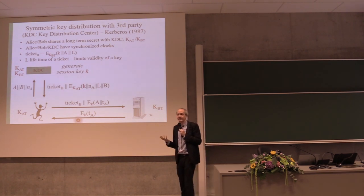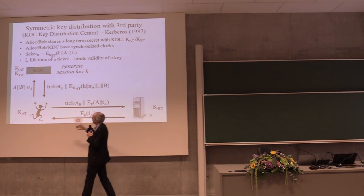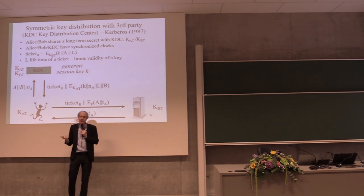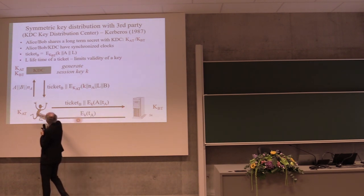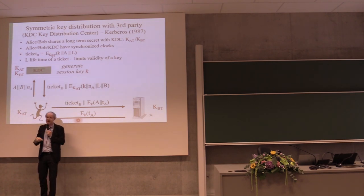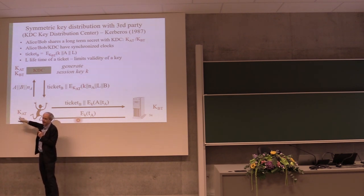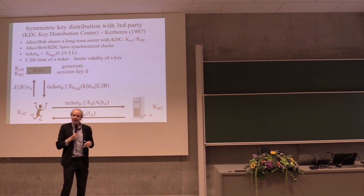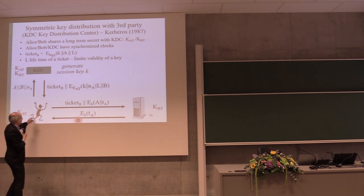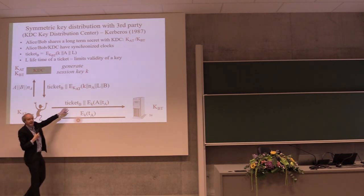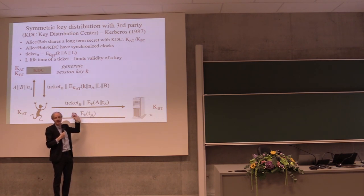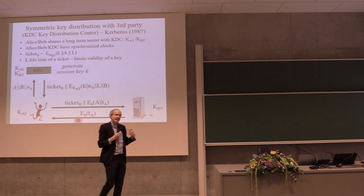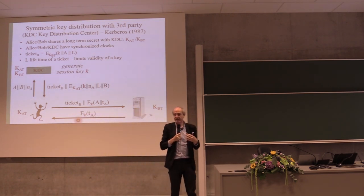Kerberos was conceived as a single sign-on system. Alice comes in the morning and wants to use a server. Since people don't remember keys, she types a password, which is hashed to get the key. This is called single sign-on because Alice also stores the ticket. Later in the day, she can send the ticket again with a new timestamp and keep using the same key to authenticate to Bob for the rest of the day. The ticket is valid for a day and can be reused. This is better than a browser just storing your password, because if hacked, you only expose a ticket valid for one day.